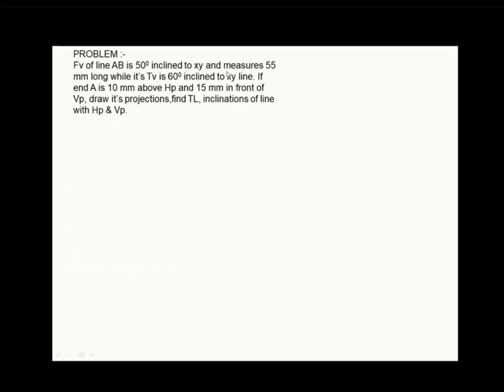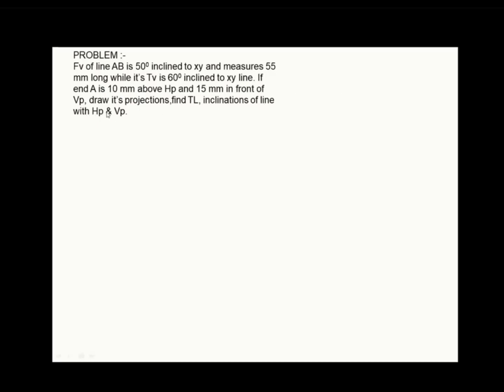The next question: the front view of a line AB is 50 degrees inclined to XY and measures 55 mm long, while its top view is 60 degrees inclined to XY. Point A is 10 mm above HP and 15 mm in front of VP. Draw its projections and find the true length and inclinations of the line with HP and VP.